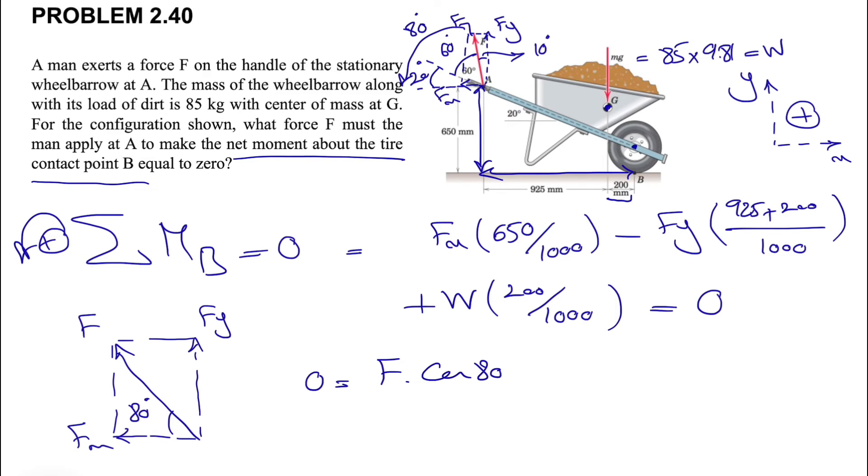It will be times 650 divided by a thousand. We have Fy, which will be F sine of 80 divided by 925 plus 200, which is 1125, divided by a thousand.